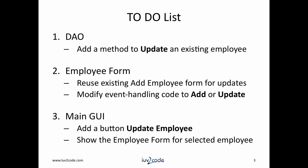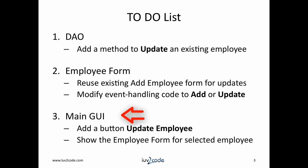To add this functionality, we have a to-do list. First, we'll need to update our DAO and add a method that handles updating an existing employee in the database — we'll use a SQL UPDATE statement for this. Next, we'll reuse our existing employee form and modify the code to add or update depending on the mode selected by the user. Finally, we need to tie this together with the main GUI by adding a new Update Employee button that shows the employee form pre-populated with the current employee's data.